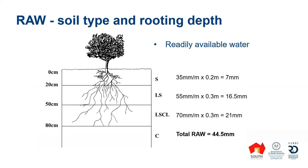Readily available water: you'd have soil profiles at a range of different depths with different soil types within those profiles, and then you can multiply those out to say how much water you have available. Most vineyards will have completed a soil survey prior to establishment or as part of an irrigation upgrade or redevelopment, so often you'll have that information on file. If you're having trouble calculating these figures, I'd encourage you to get in touch with the AWRI help desk or a local consultant to work through what the water-holding capacity of your soils is likely to be.